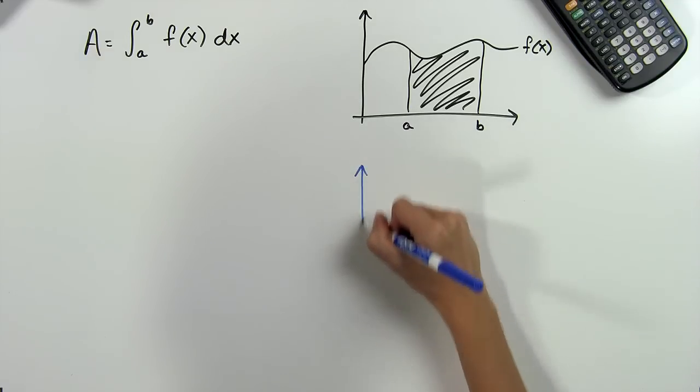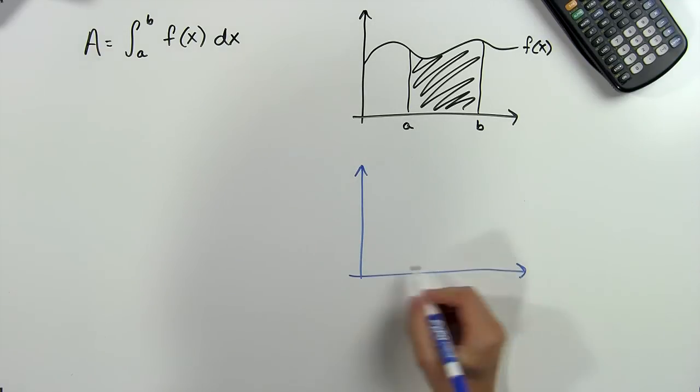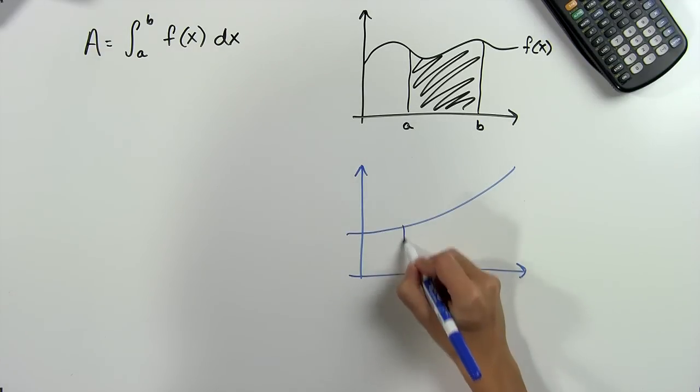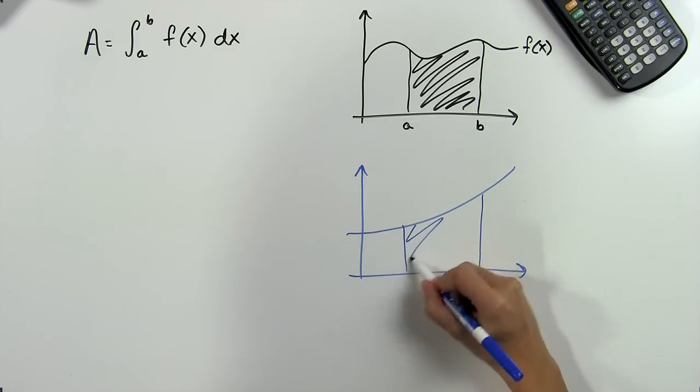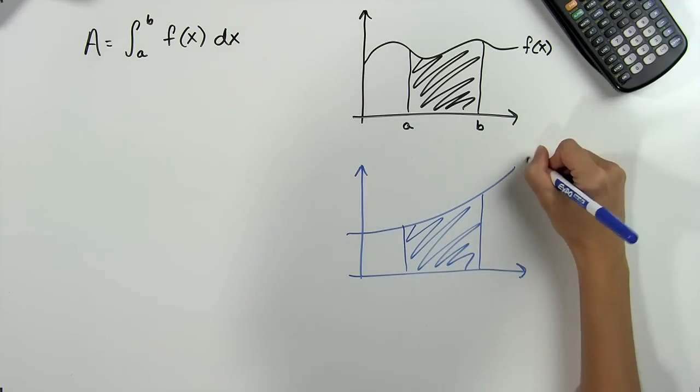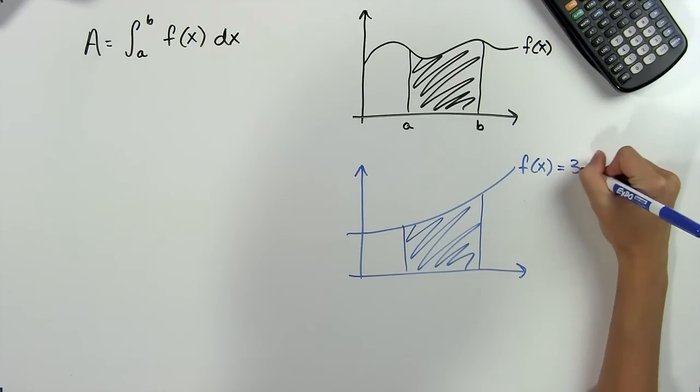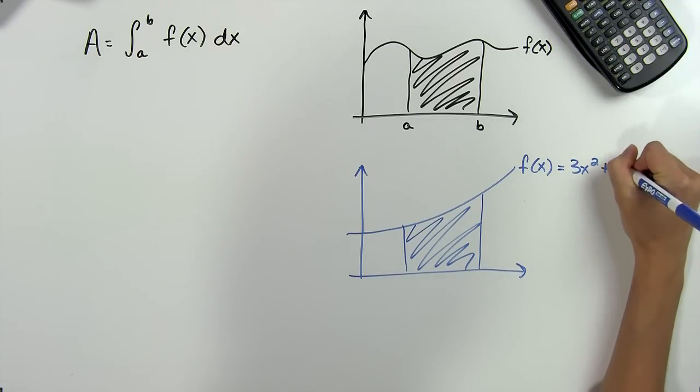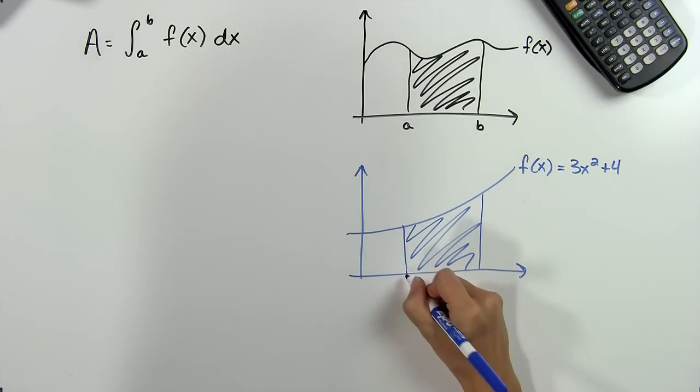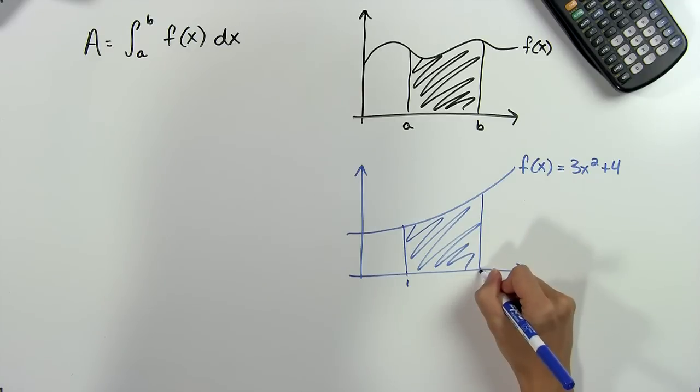For example, suppose we were asked to find the area of the shaded region in this picture, where the function is equal to 3x squared plus 4, and the points are 1 and 6.